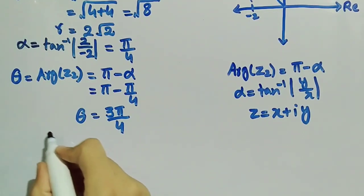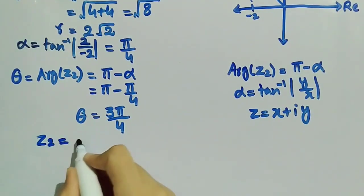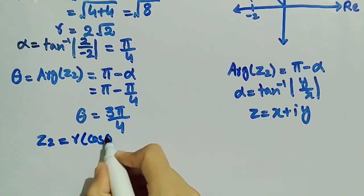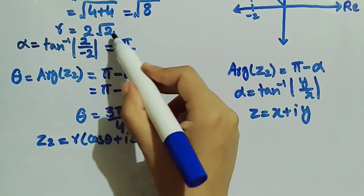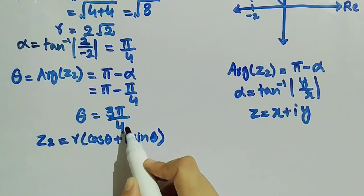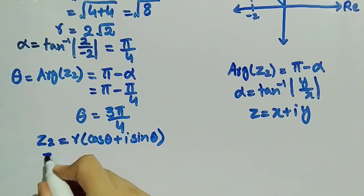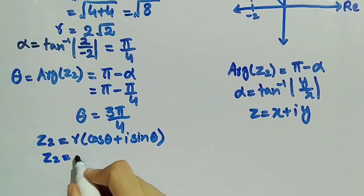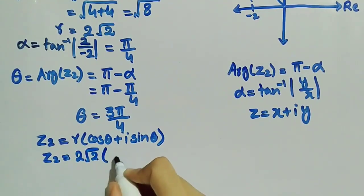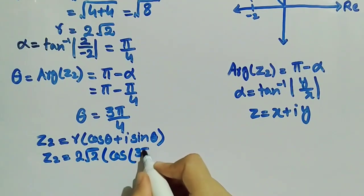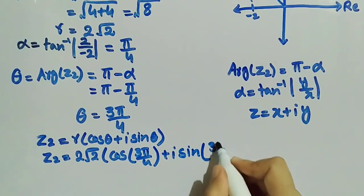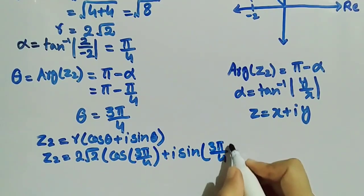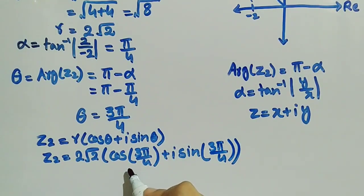We know that the polar form of any complex number is r times (cos theta + i sin theta). Here r equals 2 square root 2 and theta equals 3 pi by 4, so z2 in polar form equals 2 square root 2 times (cos(3 pi by 4) + i sin(3 pi by 4)). This is the polar form of z2 equal to minus 2 plus 2 iota.